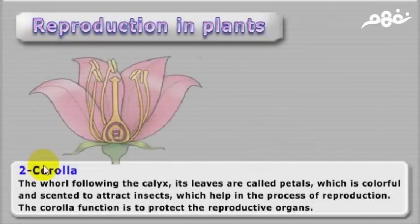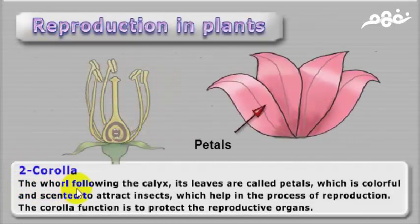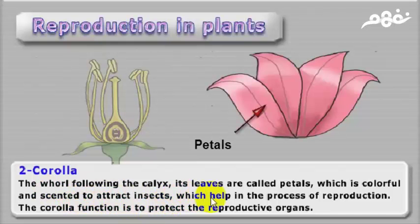Number two is Corolla. The whorl following the calyx. Its leaves are called petals, which are colorful and scented to attract insects, which helps in the process of reproduction. The corolla's function is also to protect the reproductive organs.